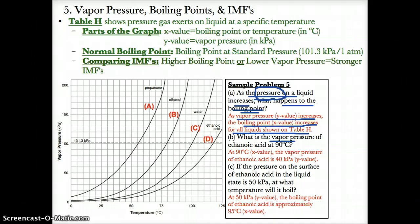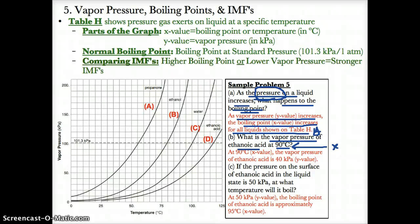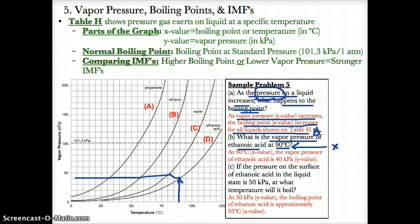In part B: what is the vapor pressure of ethanoic acid at 90 degrees Celsius? We're given the temperature — the x-value of 90 degrees Celsius — and need to find the y-value, the vapor pressure for ethanoic acid. For ethanoic acid at an x-value of 90 degrees Celsius, the y-value on the curve is approximately 40 kPa.